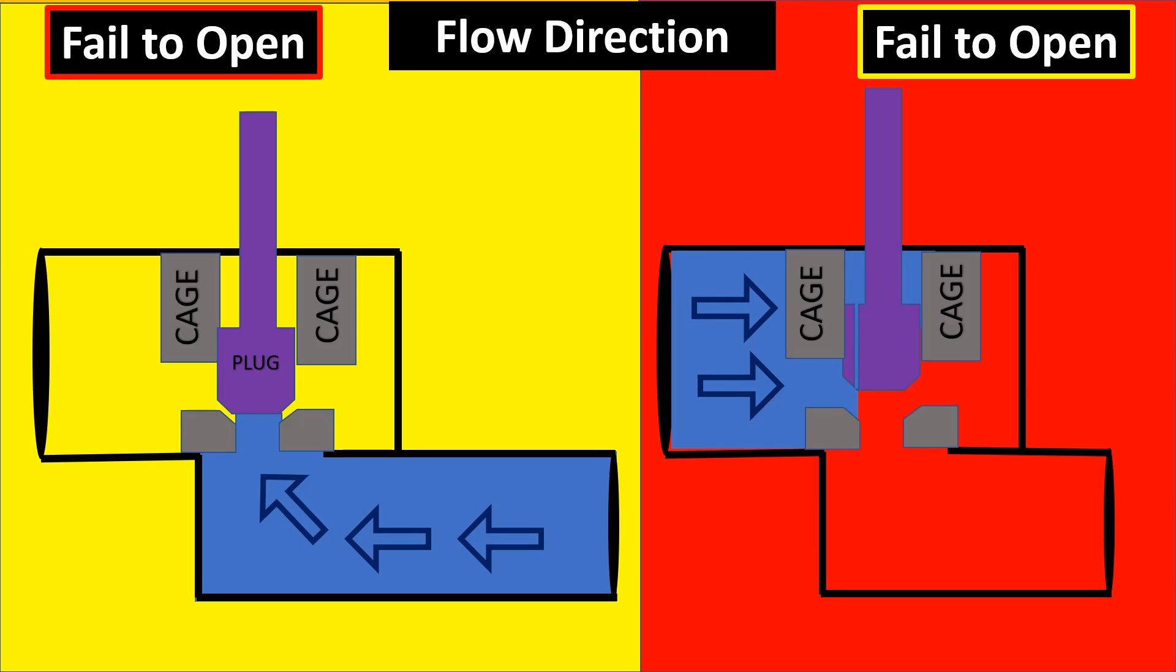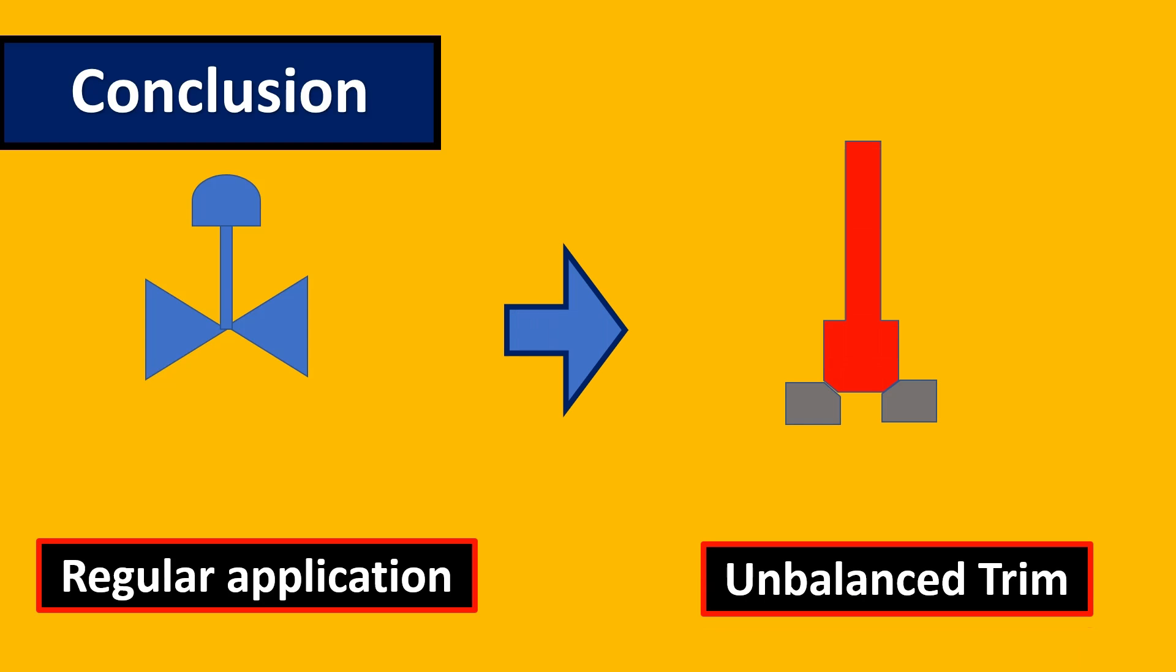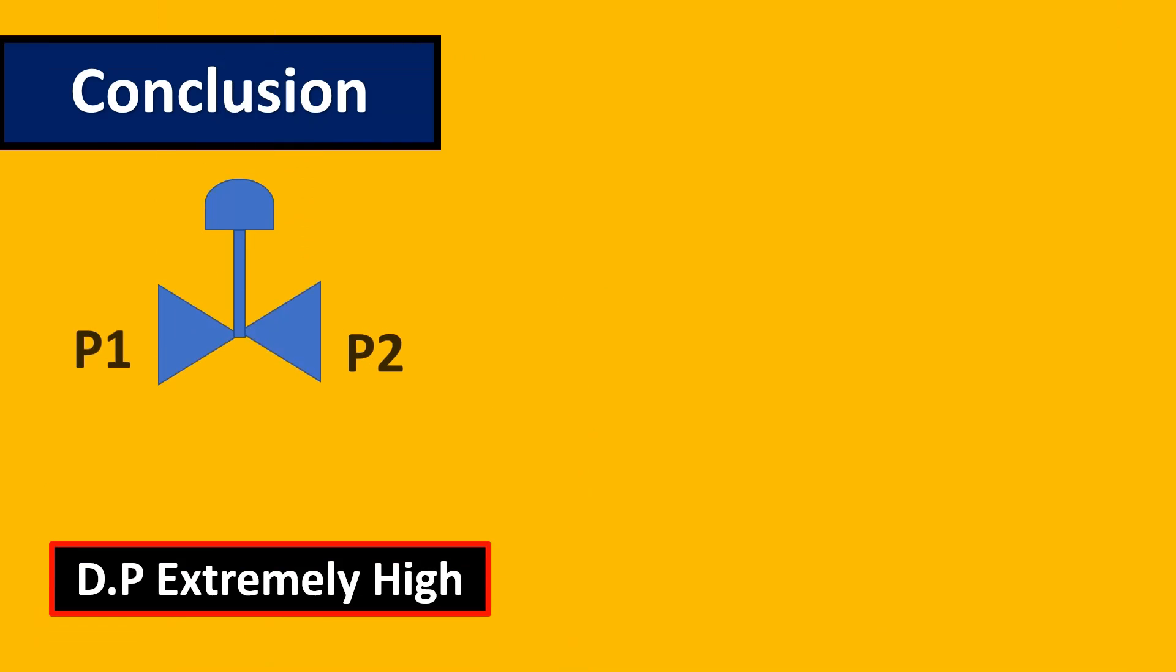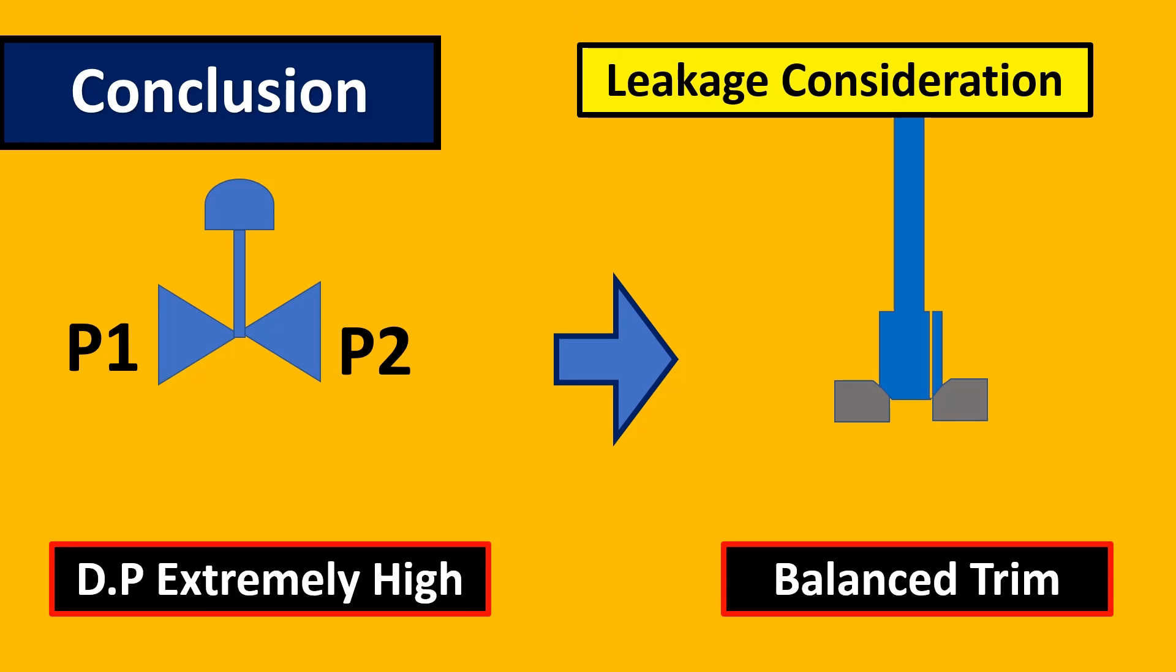Now the final verdict: when to use what? In a regular application, you would usually go for an unbalanced design—almost 90 percent of your applications—because of the leakage considerations. If you have extremely high DP and you might not want an actuator with such high torque, then you would go for a balanced trim in this case, where you are okay with the leakage considerations.